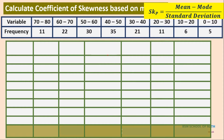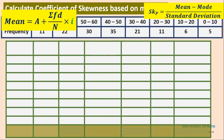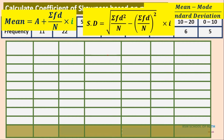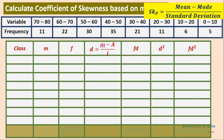The formula is: SKP = (Mean − Mode) ÷ Standard Deviation. For a continuous series, we set up a table with columns: M (midpoint of the class), F (frequency), D, FD, D², and FD². We arrange the classes starting from 0 to 10 in ascending order.